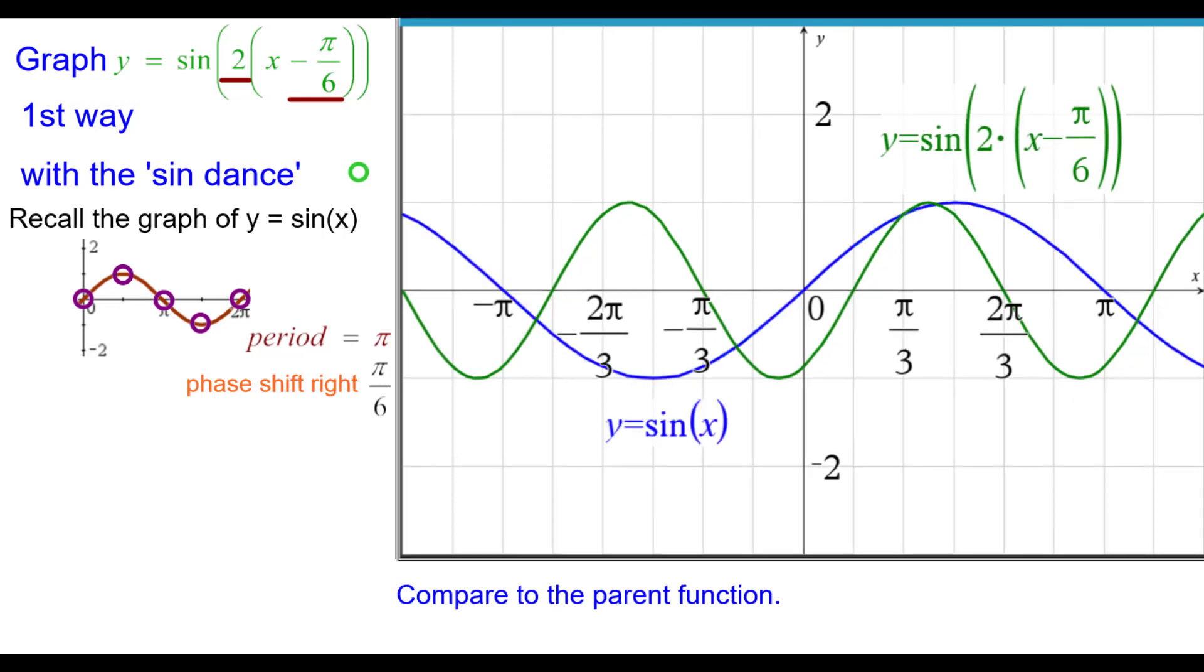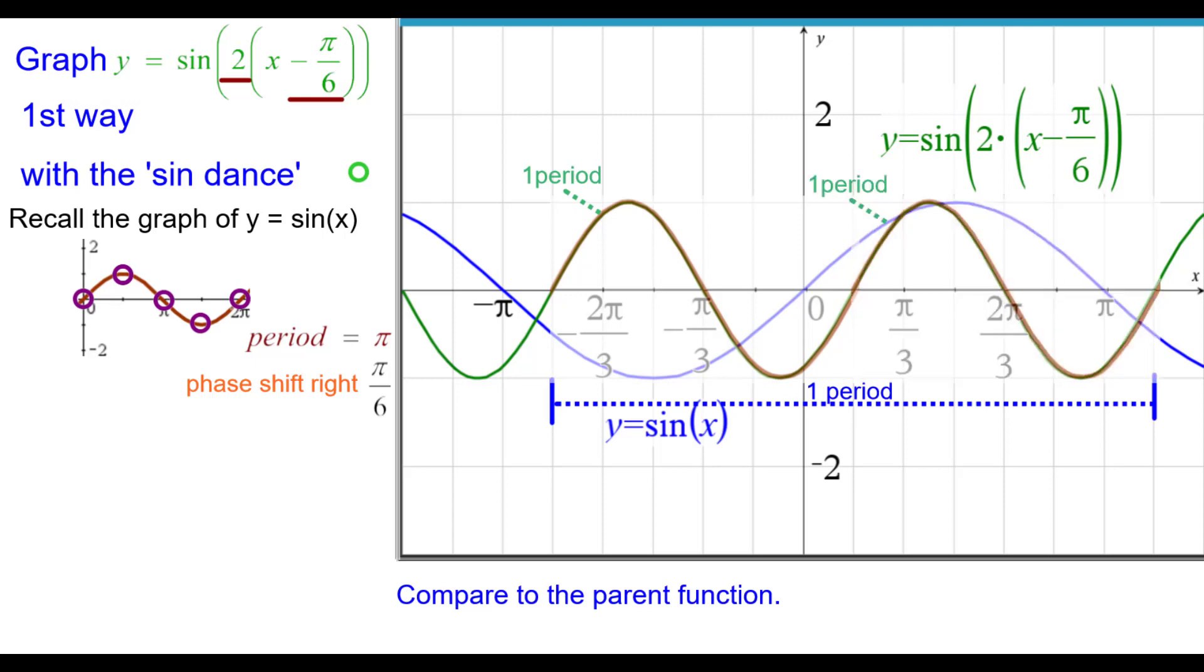Compared to the parent function. We can see that from blue to green, it is shifted to the right pi over 6. And also in one period of the sine function, we're able to get two complete periods of this function. So two periods in the same width as the sine function. And that 2 has everything to do with that coefficient right there.